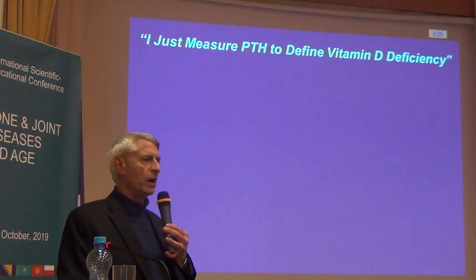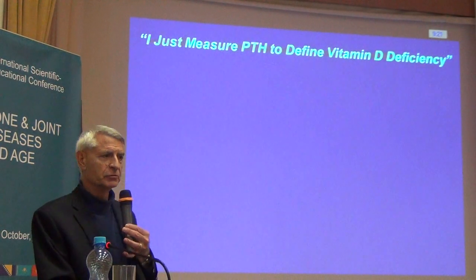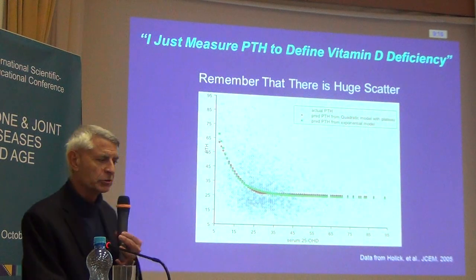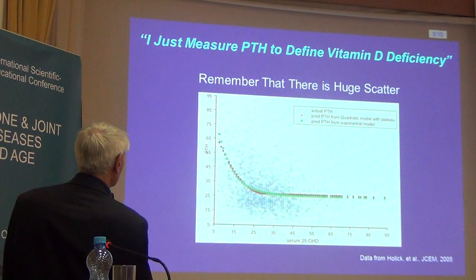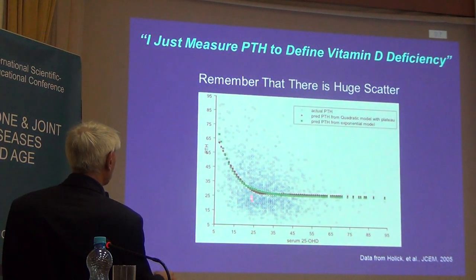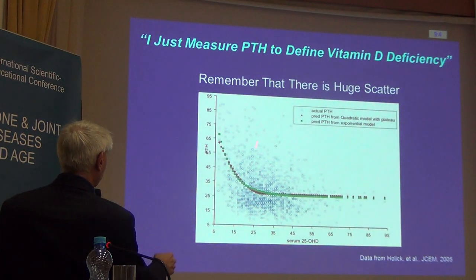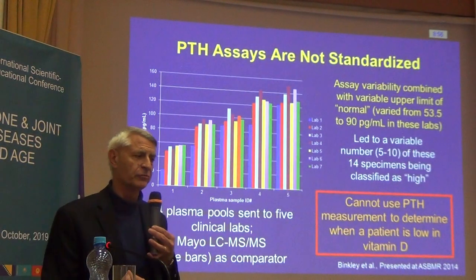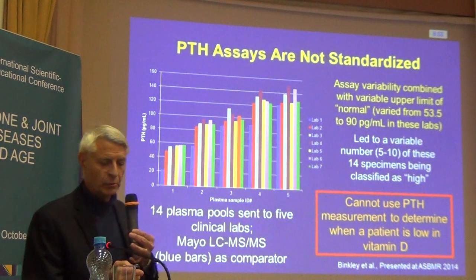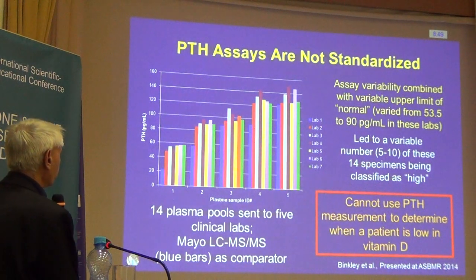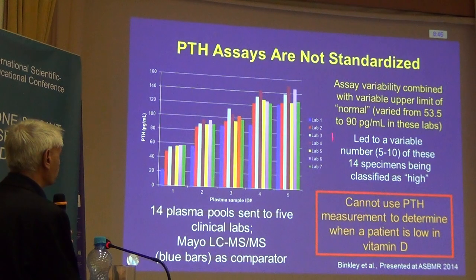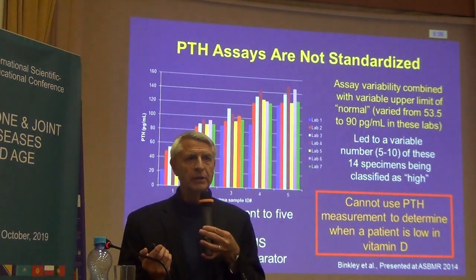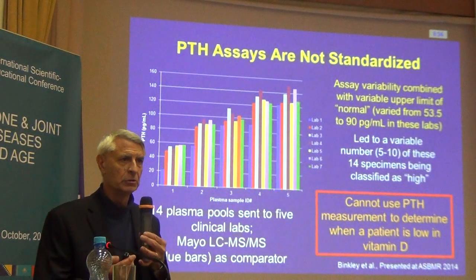I hear endocrinologists say they'll just measure PTH to define their patient's vitamin D status. But there is huge scatter in PTH based on 25-D — look at any single 25-D level such as 25 nanograms per milliliter, and the PTH scatter at that same level is enormous. Importantly, PTH assays are also not standardized. In a small study where we sent 14 specimens to seven clinical laboratories, the PTH scatter was substantial. You're kidding yourself if you think you can determine vitamin D status by measuring PTH.